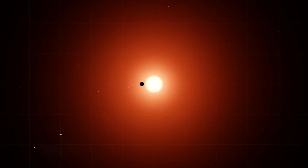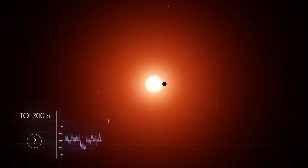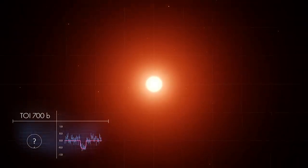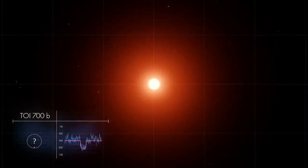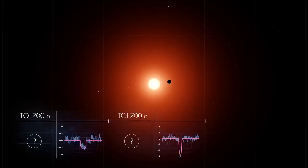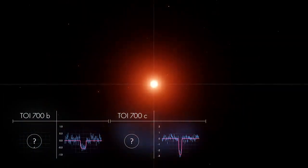One set of transits announced the presence of a planet close to the star, called TOI-700b. Another set revealed a second planet, named TOI-700c, a little farther out. The deeper, shorter transit means the planet is larger than the first, and the plane of its orbit is slightly tipped.